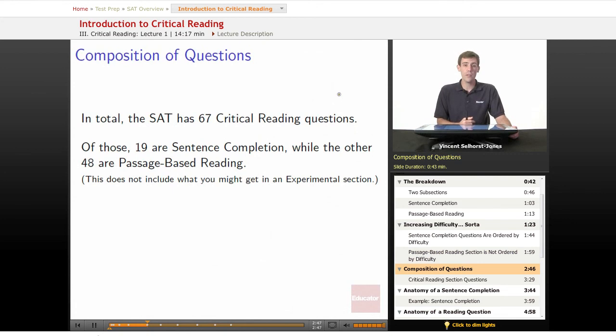So what are the questions made up? How does it look? In total the SAT will give you 67 critical reading questions over the entire test. Don't worry that's not just in one section, that's over the three sections you take. Of those 19 are sentence completion and the other 48 are passage-based reading. And remember this doesn't include what you might wind up having in an experimental section. If your experimental section winds up being critical reading you'll get different numbers of this but ultimately only 67 of them will matter.